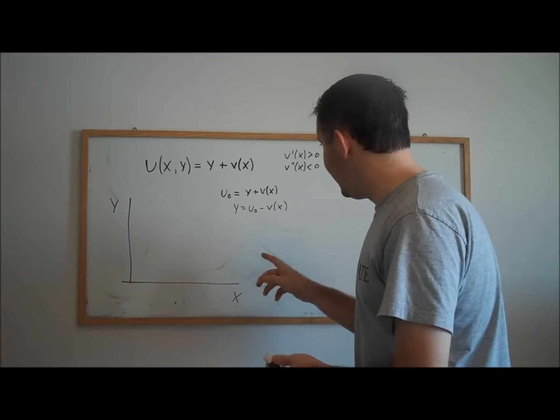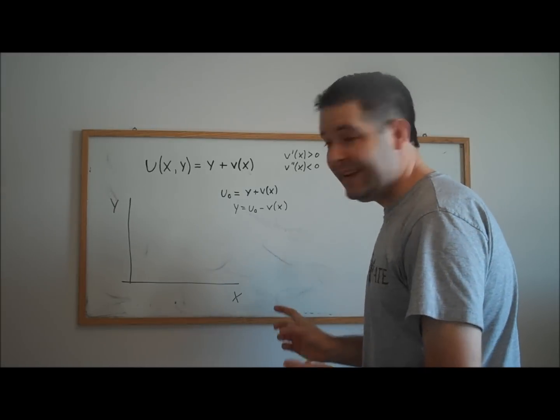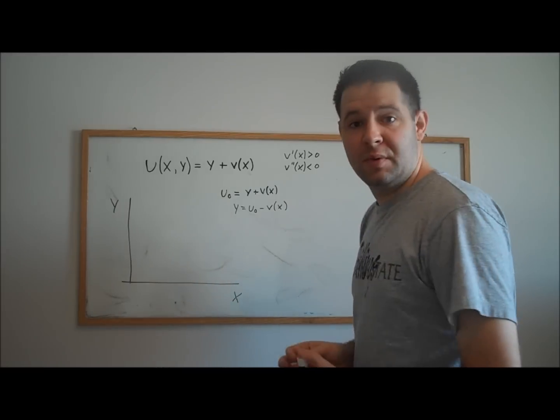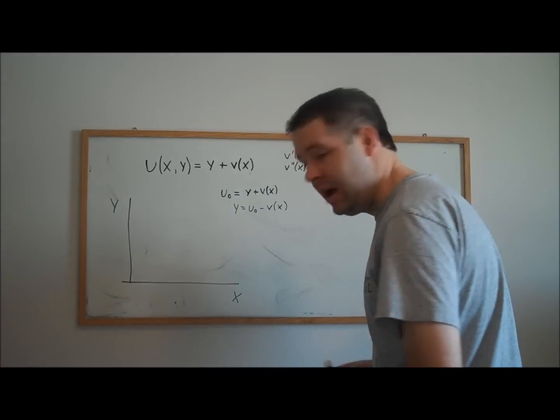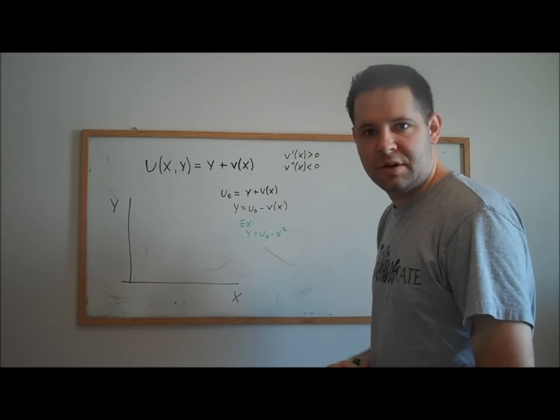So you can see why we have to have this diminishing marginal utility of x. If we didn't have that, then our indifference curves would actually be concave. I'll go ahead and show you an example with x squared.